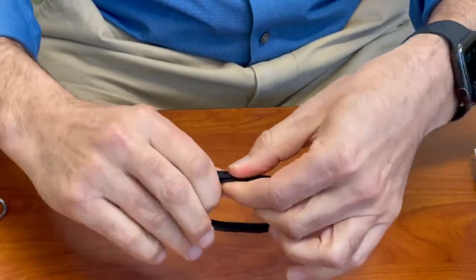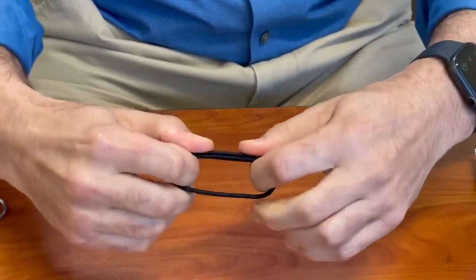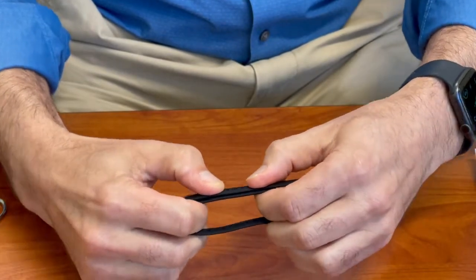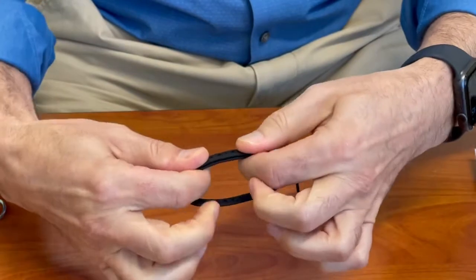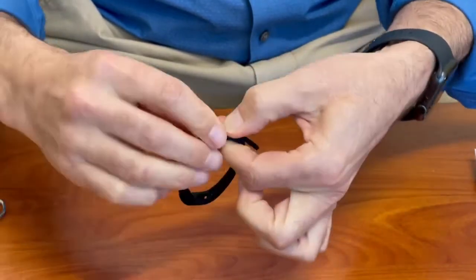We then form the rigid zone, which is the doubled over portion of the splint. Continue to wrap that around, keeping the bands adjacent to each other.